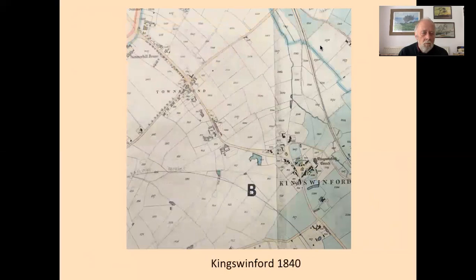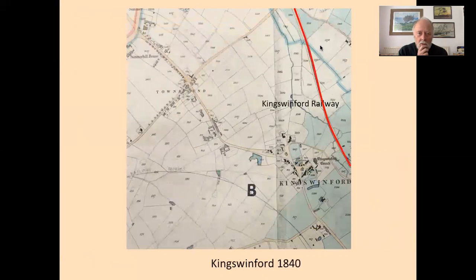By 1840 there has been a bit more urbanism, with more housing along the road. But the major change is that the King Swinford railway has now come from Ashwood Basin on its way to Corbyns Hall, running surprisingly close to King Swinford church — roughly the top end of Kingswinford Park today. At that point were the mines that caused St Mary's church so much concern in the 1820s and 1830s.